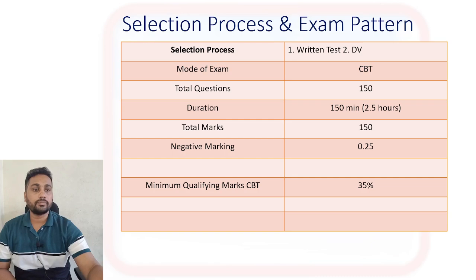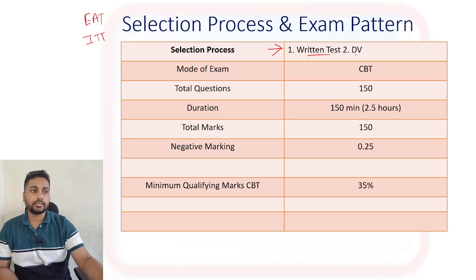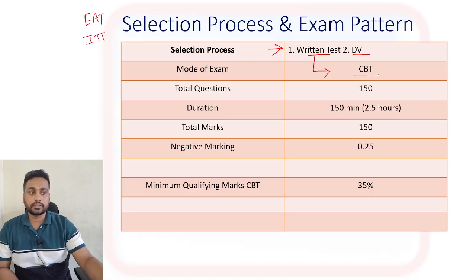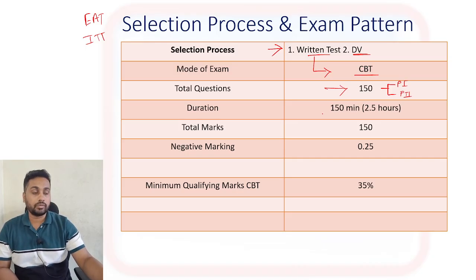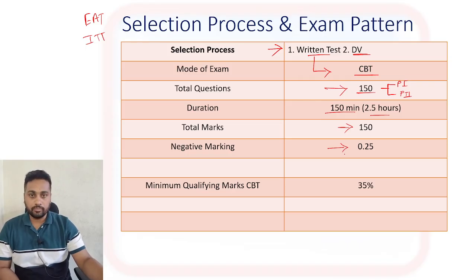First we will see the selection process and exam pattern. Whether you are applying for EAT or ITI Technician, both have the same process. The selection process is based on two stages only: written test and DV — document verification. In the written test, they are going to conduct a CBT — computer based test — with a total of 150 questions to cover in 150 minutes, which is 2.5 hours. Each question carries one mark, so the total is 150 marks.